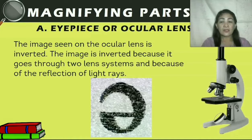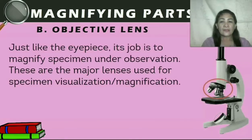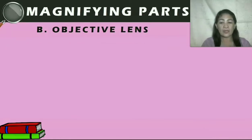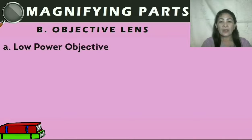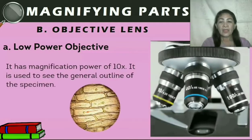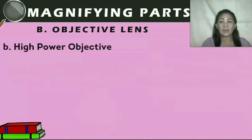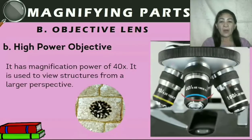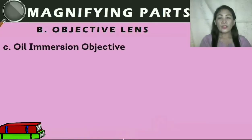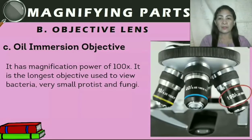Next are the objective lenses. Just like the eyepiece, their job is to magnify the specimen under observation. These are the major lenses used for specimen visualization and magnification. Most compound microscopes have three objectives; some have four. The typical objective lenses are: first, low power objective — magnification power of 10 times, used to see the general outline of the specimen; second, high power objective — magnification power of 40 times, used to view structures from a larger perspective; third, oil immersion objective — magnification power of 100 times, the longest objective used to view bacteria, very small protists, and fungi, requiring special oils such as quality cedarwood oil.